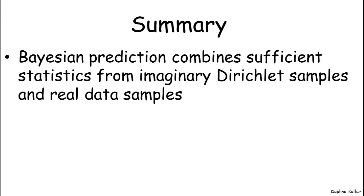In summary, Bayesian prediction combines two types of, you might call them sufficient statistics.